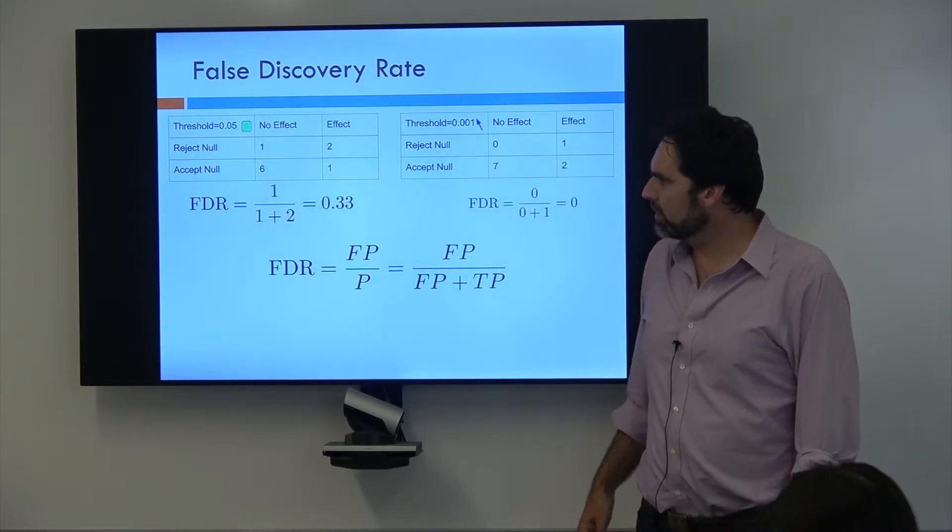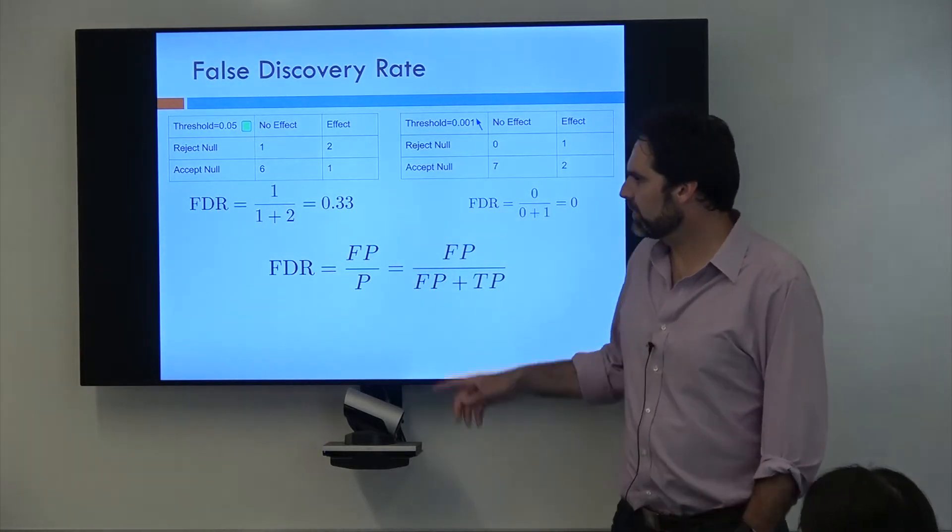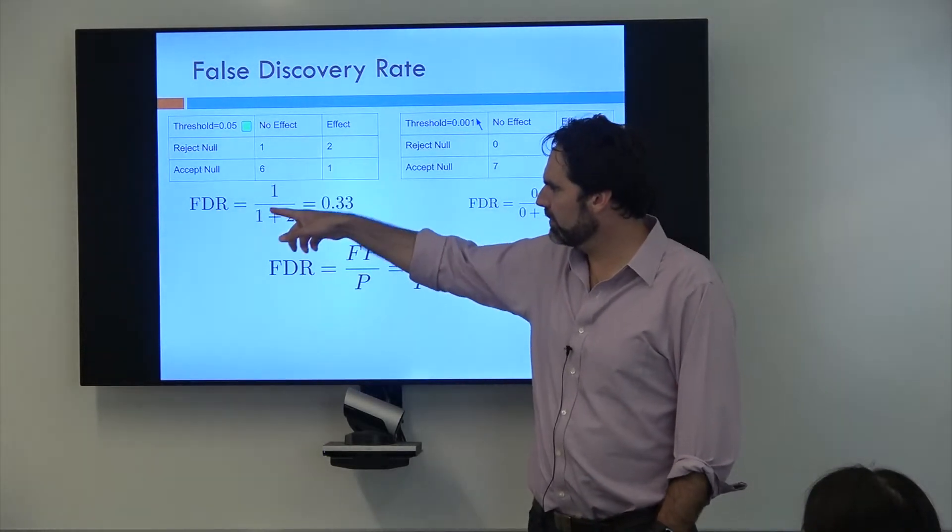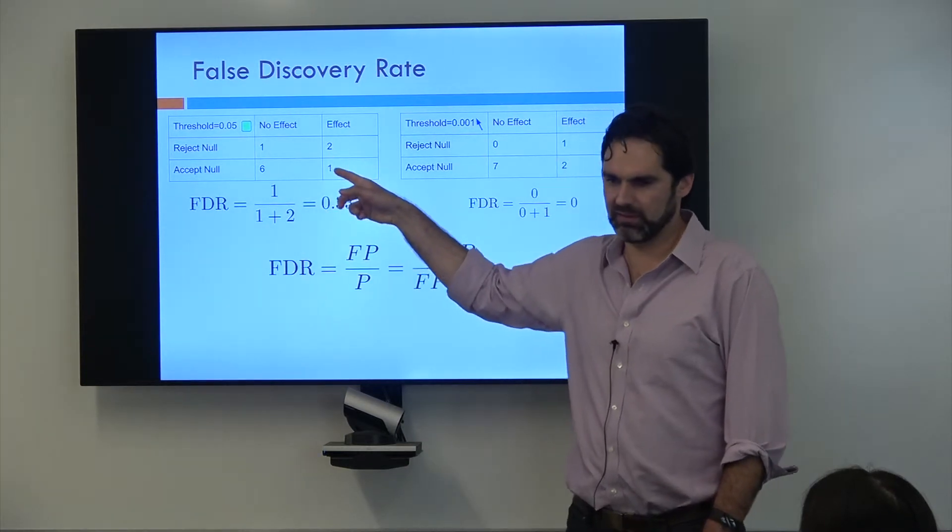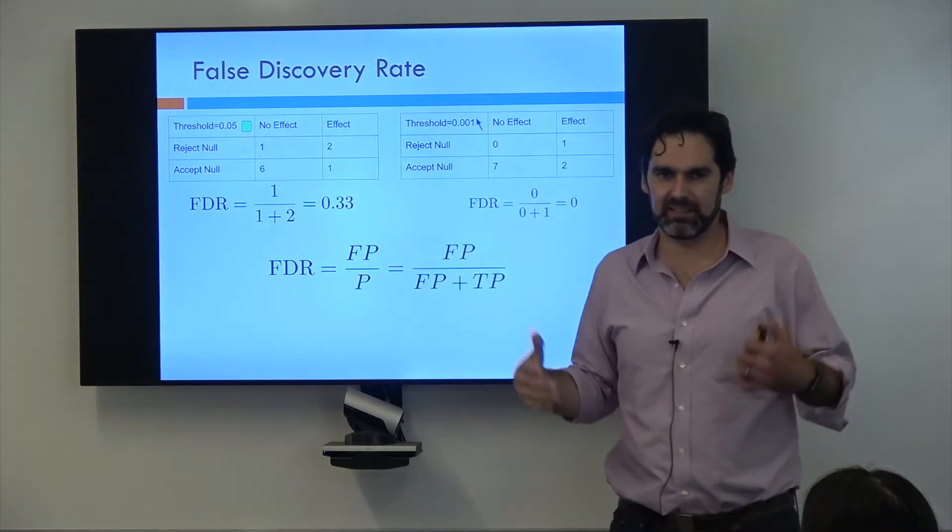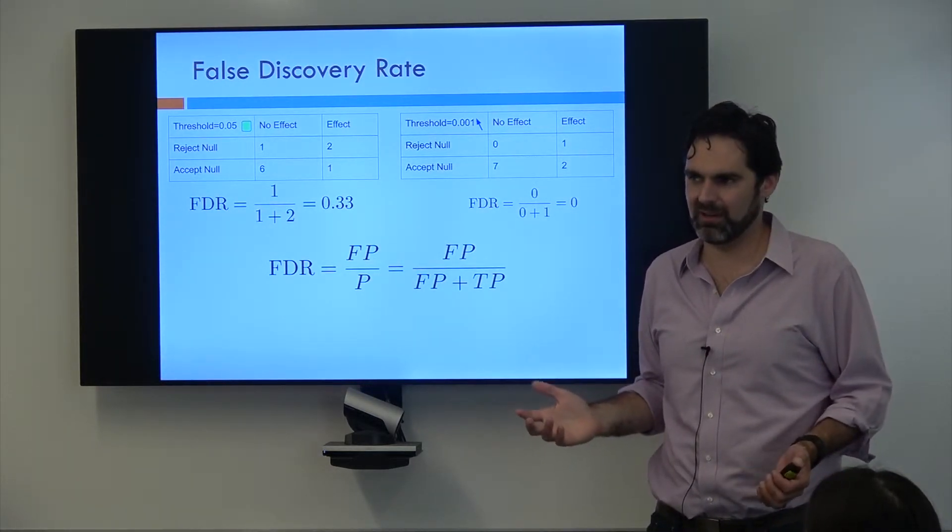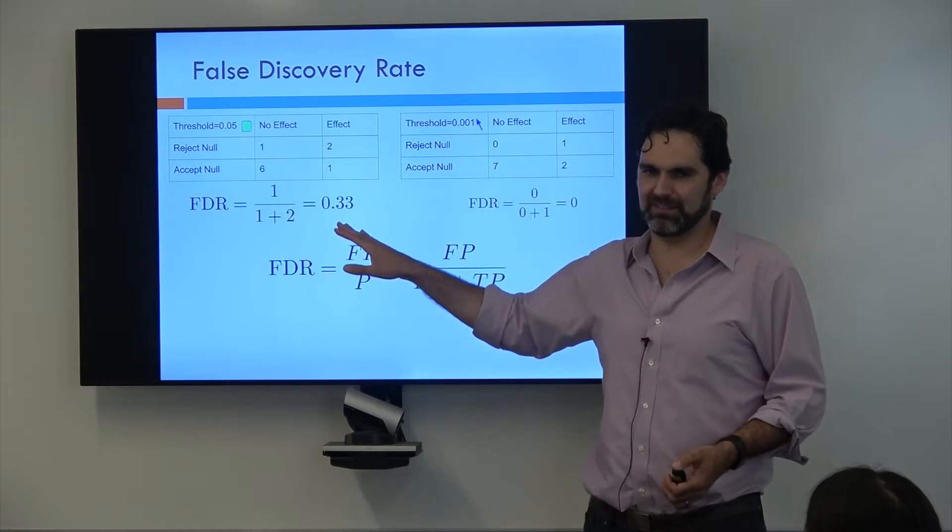So if we look over here on the left, our false discovery rate is the one false positive divided by the three positives that we have. So here, it's telling us that 33% of what we said is significant is in fact not, and we were just wrong about. That's a pretty high false discovery rate.